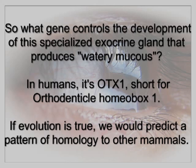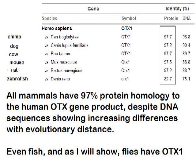So what gene controls the development of the specialized exocrine gland that produces watery mucus? In humans, it's OTX1, short for orthodenticle homeobox 1. If evolution is true, we would predict a pattern of homology to other mammals. All mammals have 97% protein homology to the human OTX1 gene product, despite DNA sequences showing increasing differences with evolutionary distance. Even fish and flies have OTX1.